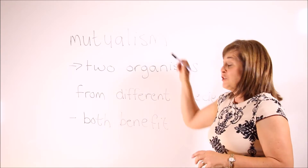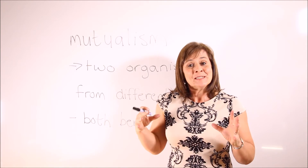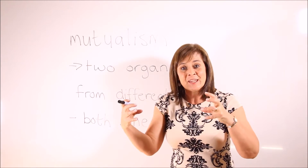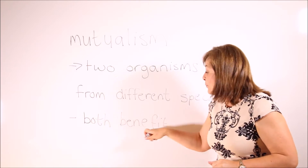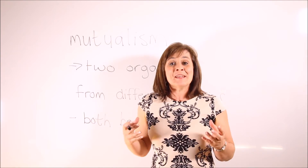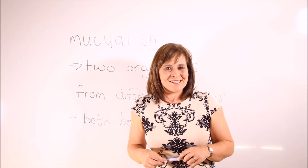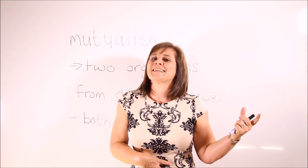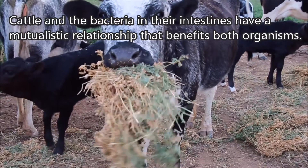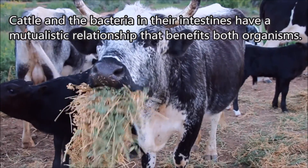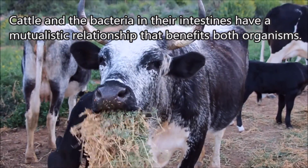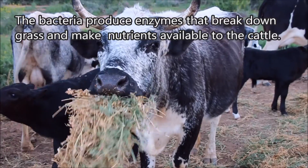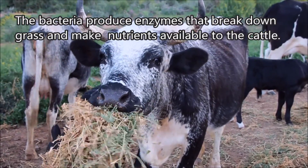There are several different forms of symbiosis, but we will only look at two of them. The first is mutualism. Mutualism is a relationship in which two organisms from different species live together, rely on each other, and both benefit — in other words, the benefit is mutual. Cattle and the bacteria in their intestines have a mutualistic relationship that benefits both organisms.